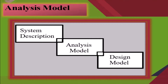The systems description provides information about the entire functionality of the system, which is achieved by implementing the software, hardware and data. In addition, the analysis model specifies the software design in the form of a design model, which provides information about the software architecture, interface, and component level structure.